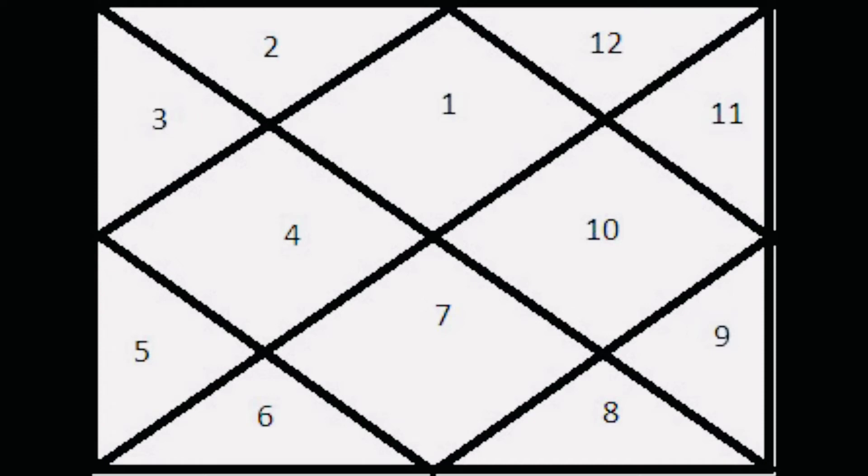So let's say if seven number is written in the ascendant, then it will go anti-clockwise. Then the second house would be number eight, that number eight zodiac sign will be placed over there. And one more thing, in this birth chart it always follows the anti-clockwise order. So from ascendant it will go anti-clockwise up until the 12th house.